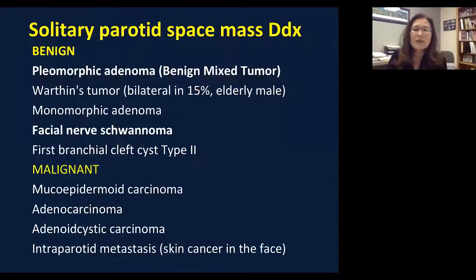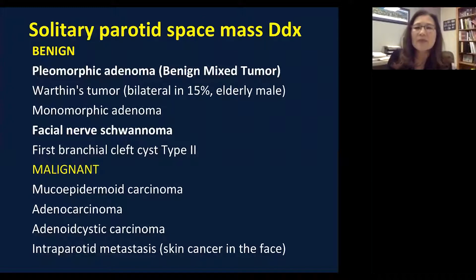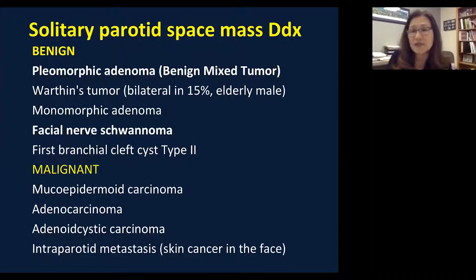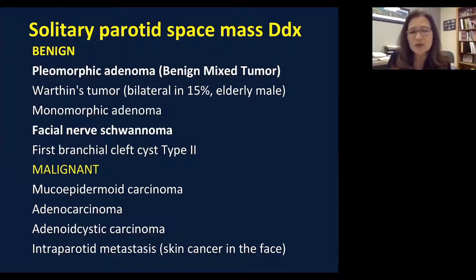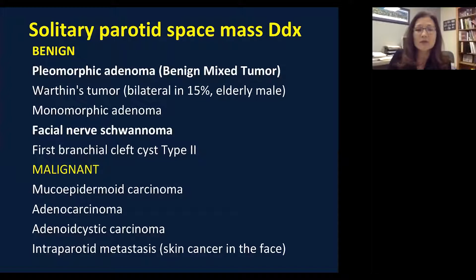To summarize, the solitary parotid space mass differential diagnosis for benign lesions includes: benign mixed tumor (also called pleomorphic adenoma), Warthin tumor (bilateral in 15–20%, elderly smoking male), monomorphic adenoma, facial nerve schwannoma, and for cystic lesions, first branchial cleft cyst type 2. Malignant tumors in the parotid gland include mucoepidermoid carcinoma, adenocarcinoma, adenoid cystic carcinoma, and intraparotid metastasis.